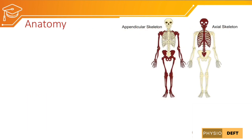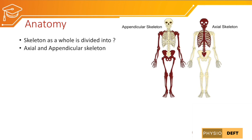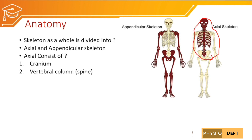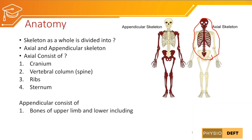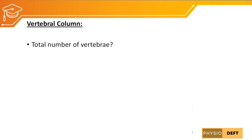First, let us discuss the basic anatomy of the skeletal system. The skeletal system is divided into two segments: the axial skeleton and the appendicular skeleton. The axial skeleton consists of the cranium, vertebral column, ribs, and sternum. The appendicular skeleton consists of bones of the upper limb, the lower limb, clavicle, scapula, and the pelvis. The vertebral column comes under the axial skeleton.